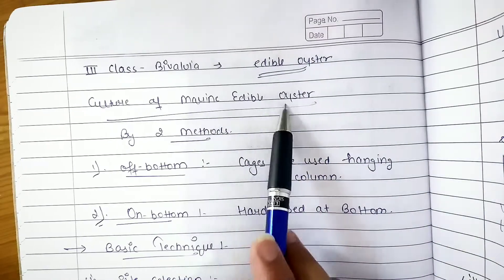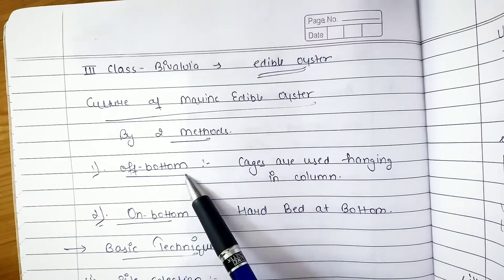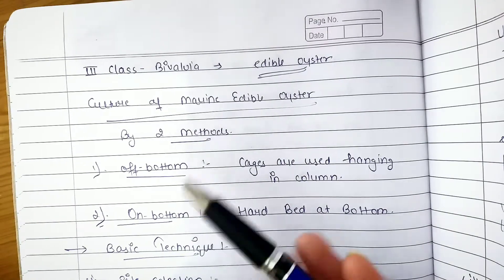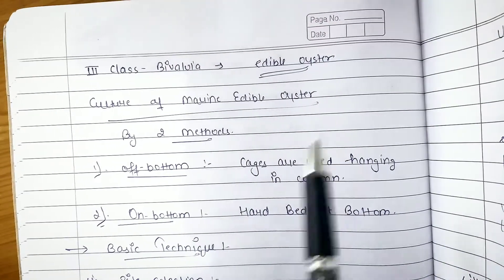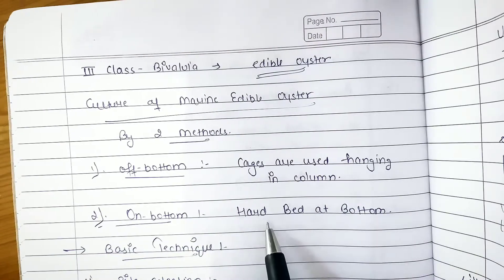Here we do the culture of edible oyster. This is a culturing part off bottom and on bottom. Off bottom means it is hanging, so here we hang the cage. On bottom is the culturing part where we have the basic techniques.